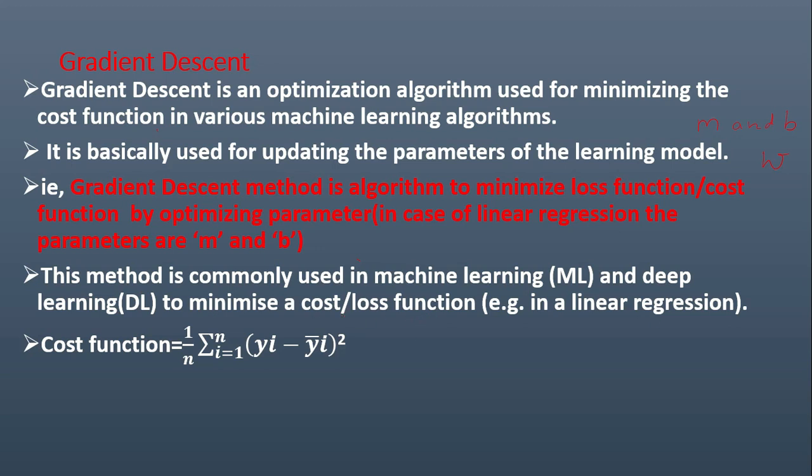In linear regression, the cost function is written as 1 by n, sigma is equal to 1 to n, yi minus yi bar the whole square. And in regression, this cost function or this error function is differentiable. And if it is differentiable or if you take the derivative of it, you can easily find out the gradient.